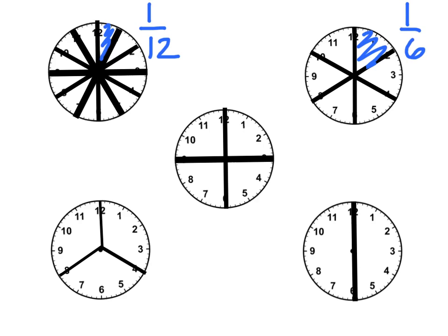We can also take a look at this clock in the middle. This clock has been broken into 4 equal pieces, or fourths, otherwise known as quarters. And if I shade in one of these segments, that is 1 fourth. So we could talk about the clock being broken down into fourths as well.